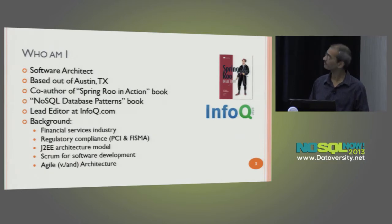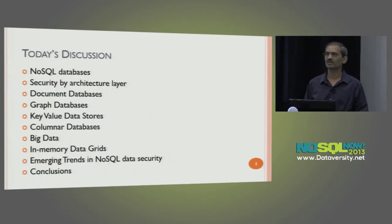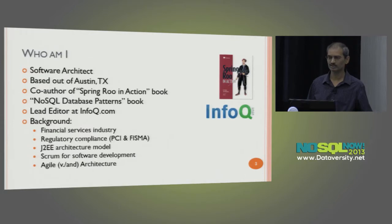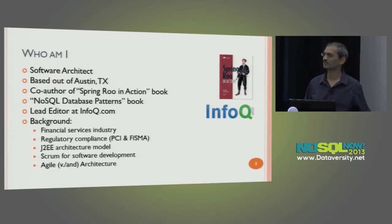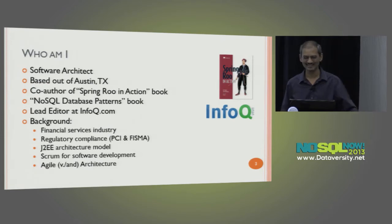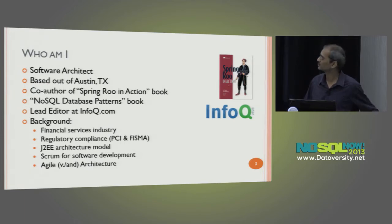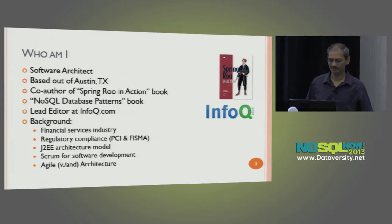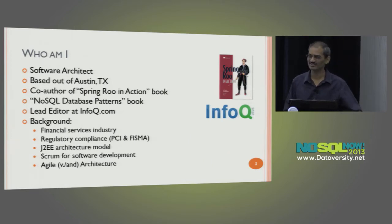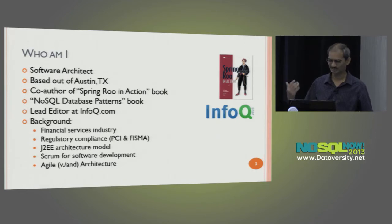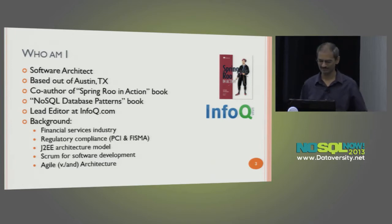About myself: I work as a software architect for a payment processing company in Austin, Texas. When a customer swipes their credit card, we are one of several processing vendors making a few cents of a dollar in the payment processing business. I wrote a book called Spring Roo in Action, and I'm working on a NoSQL database patterns book. I'm also a lead editor at InfoQ.com. My background has been in financial services, so security is a necessary evil for us.